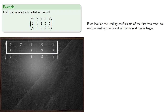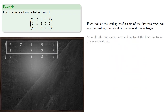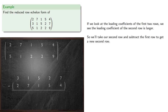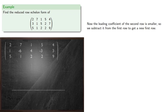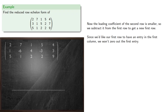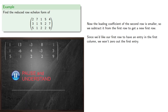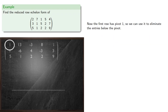If we look at the leading coefficients of the first two rows, we see the leading coefficient of the second row is larger, so we'll take our second row and subtract the first row to get a new second row. Now the leading coefficient of the second row is smaller, so we subtract it from the first row to get a new first row. Since we'd like our first row to have an entry in the first column, we won't zero out the first entry, even though we could. Now the first row has pivot 1, so we can use it to eliminate the entries below the pivot.